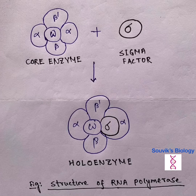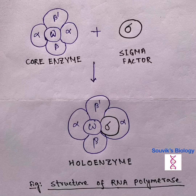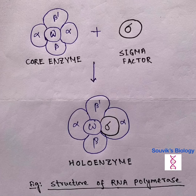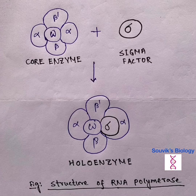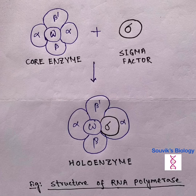So the function of this enzyme is to help in the formation of mRNA from DNA. The function of the sigma factor is to help identify the promoter region of DNA. After binding the promoter region, the sigma factor detaches from it and then finds another promoter region.